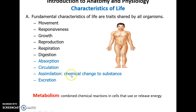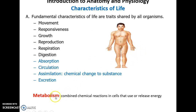Assimilation involves chemical changes to substances. Digestion has done some chemical changes to what we brought into the body, and you can also take those nutrients and change them chemically again to build new things within the body. Excretion gets rid of any wastes. All together, we have what's called metabolism — the combined chemical reactions in cells that use or release energy, basically all the chemical reactions in your body.